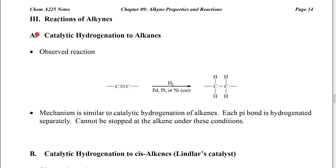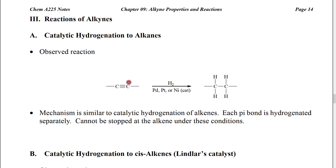The first one we're going to look at is catalytic hydrogenation. In this reaction, we start with an alkyne and treat it with hydrogen gas and either palladium, platinum, or nickel metal catalyst. The pi bonds in the alkyne will be broken and absorb hydrogen.